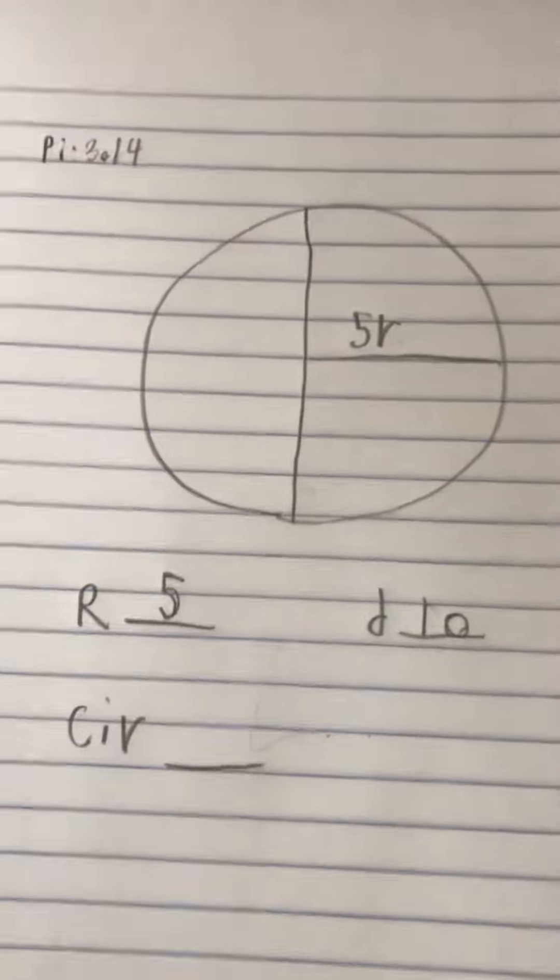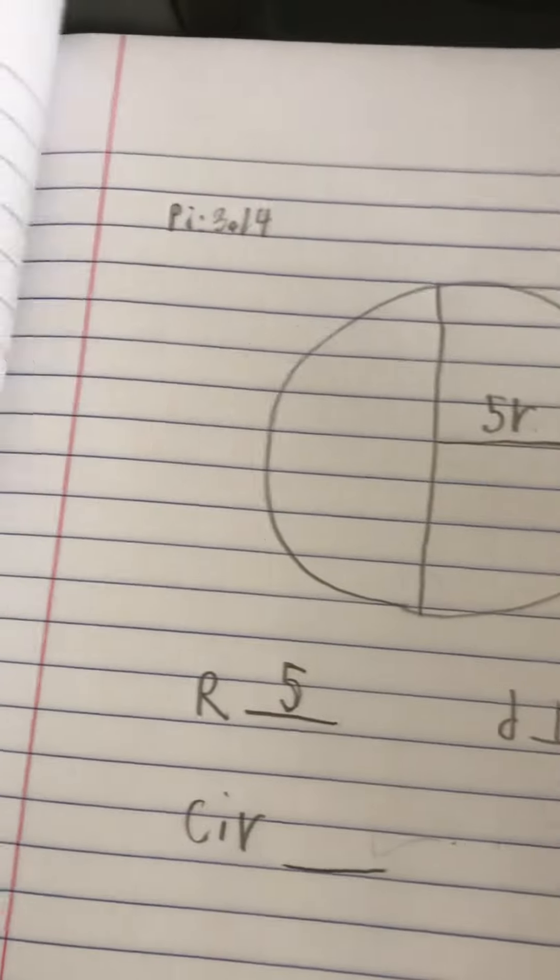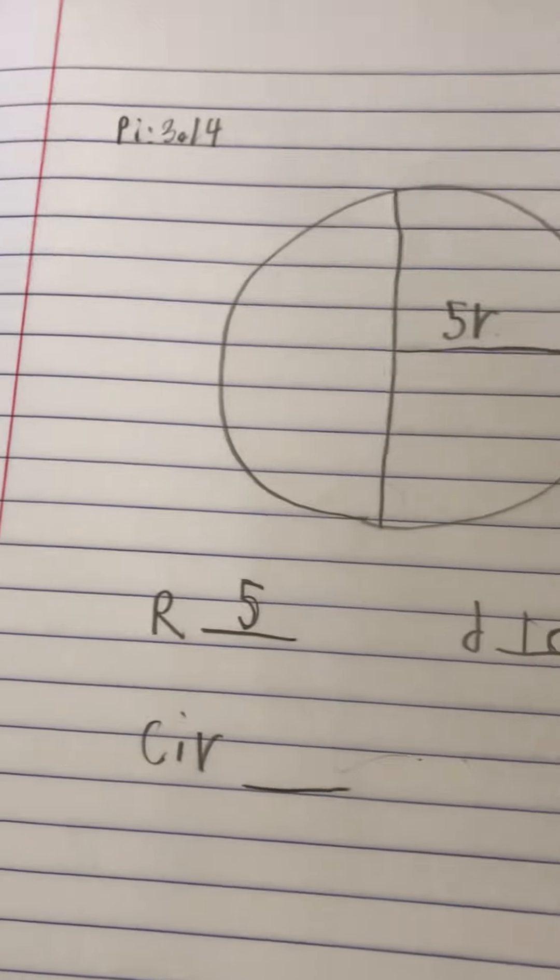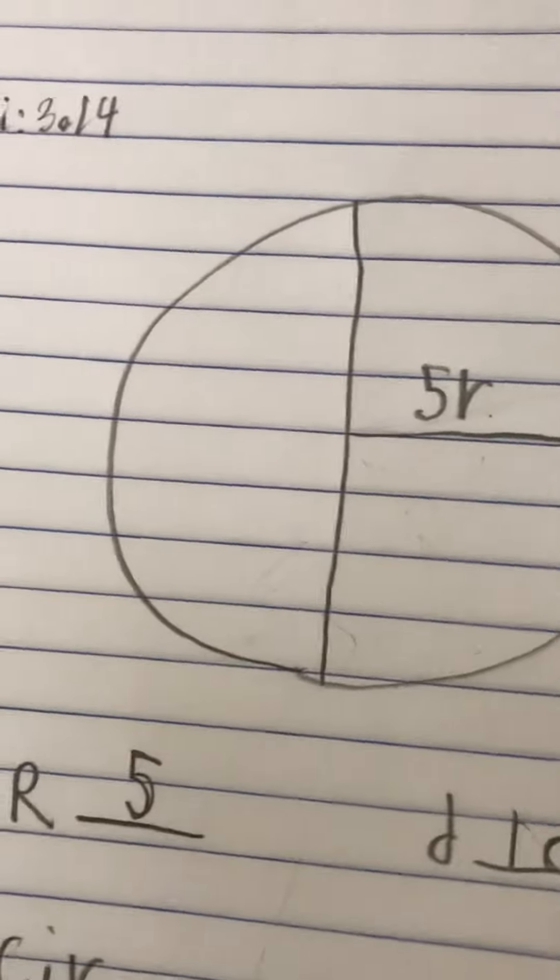The pi in math is always equal to, no matter what, 3.14. It's always equal to 3.14.